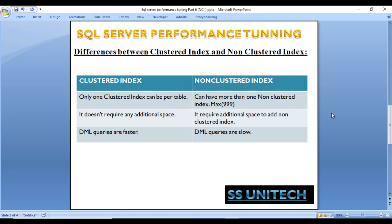Next, let's look at the differences between clustered index and non-clustered index. As mentioned, only one clustered index can exist per table, whereas non-clustered indexes can have more than one — up to a maximum of 999. Clustered index does not require any additional storage space, but non-clustered index does require additional space. For DML queries, clustered index performs faster, whereas non-clustered index is slower because it needs to update both the index and the table.